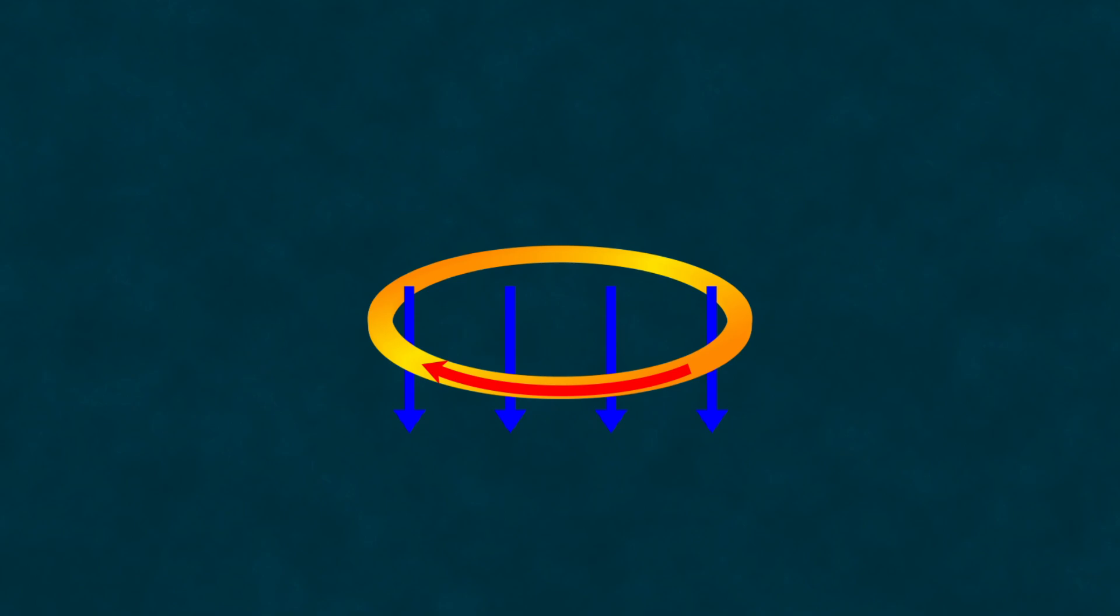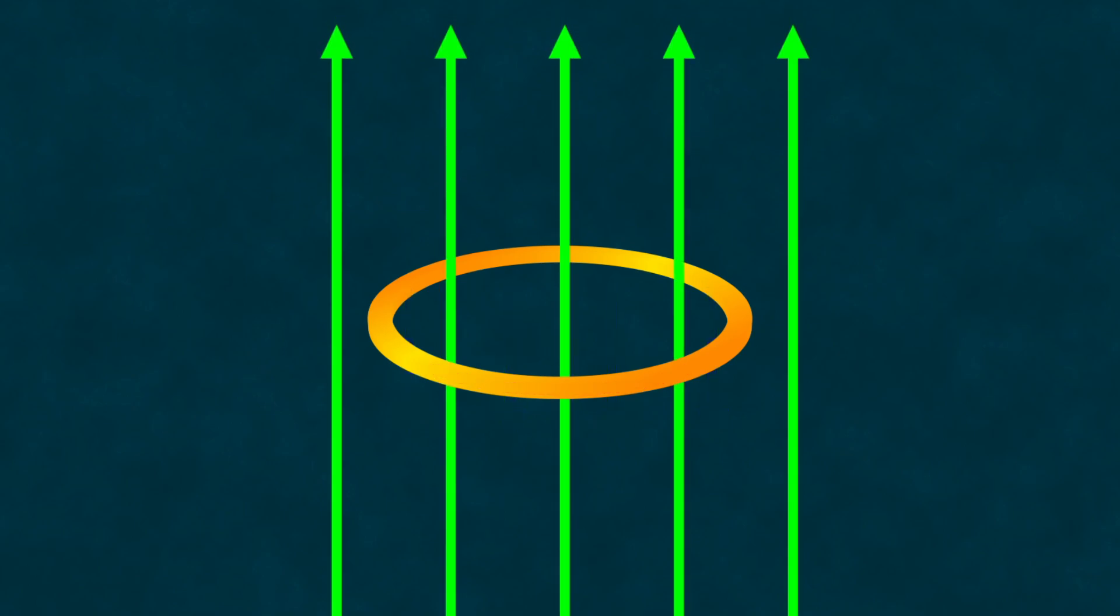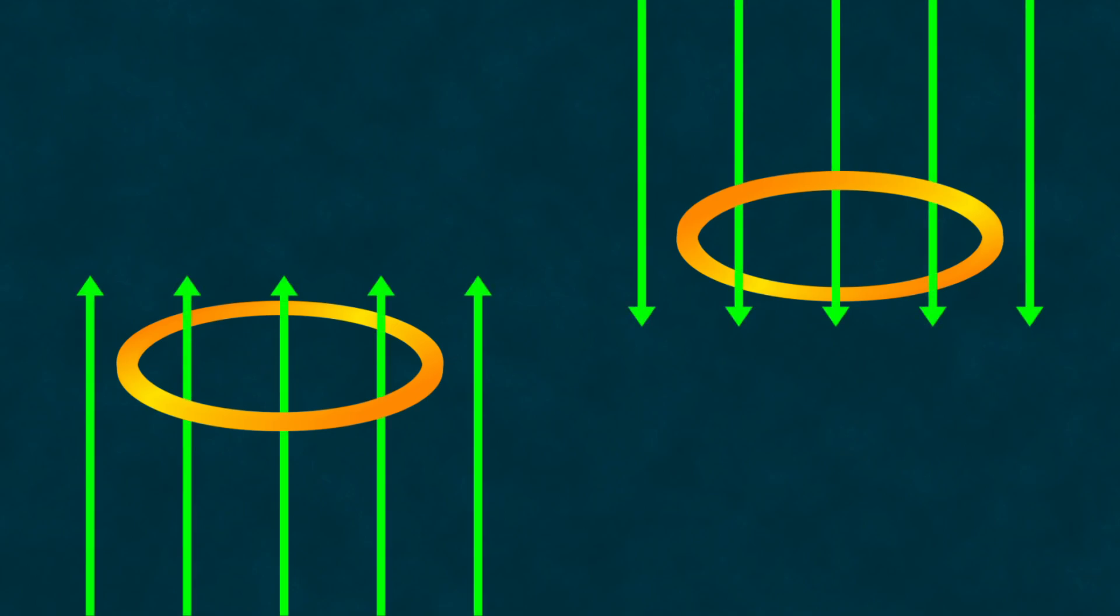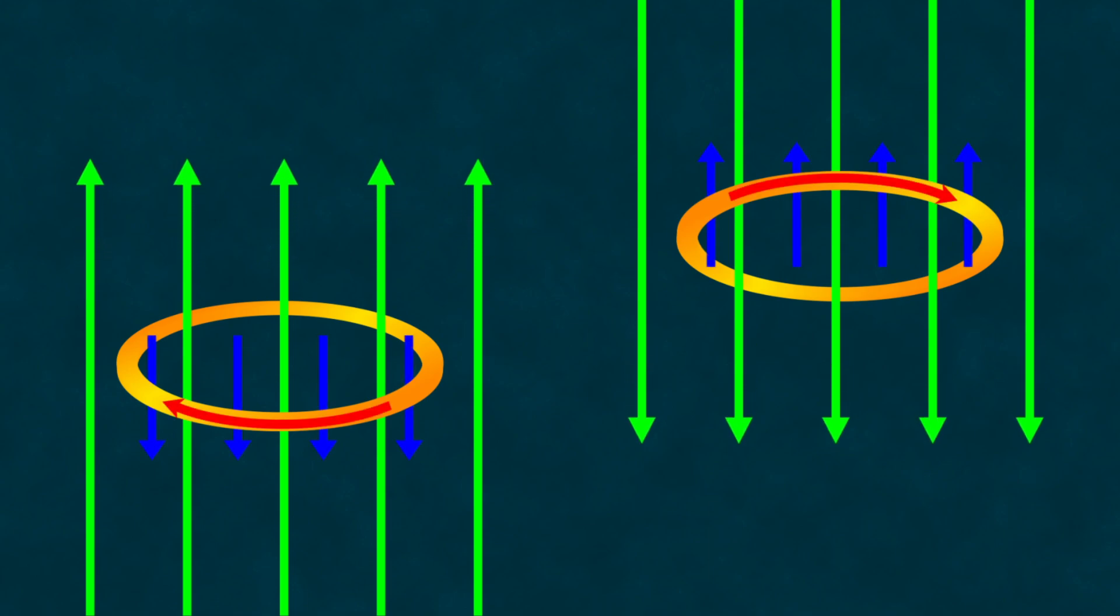Conversely, if the external magnetic field decreases, the magnetic field of the current loop will try to oppose this process, meaning it will be directed upwards, corresponding to a current flowing counterclockwise. If the magnetic field is directed downwards, everything will be reversed. Increasing the field will cause the coil's magnetic field to be directed upwards, with a counterclockwise current, and decreasing the magnetic field will cause the induced magnetic field to be directed downwards, with a clockwise current.